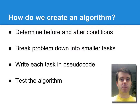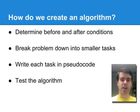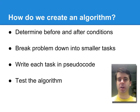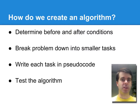What are some techniques that we use to create algorithms for our programs? The first thing you need to do is determine what we call level zero in our stepwise design, which is the before and after conditions — what has to be true before the algorithm runs, and what has to be true when the algorithm has finished running. If you can't define the problem you're trying to solve, it's going to be hard to come up with a solution. Then we need to take that problem and break it down into smaller tasks.